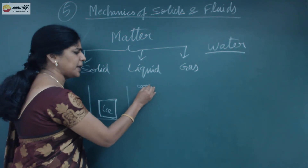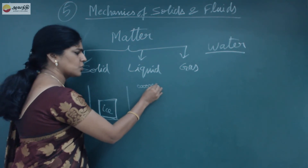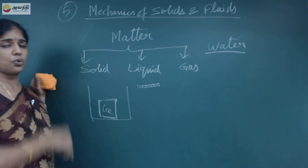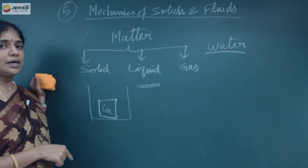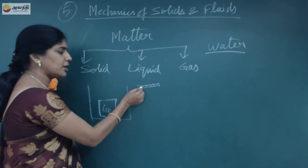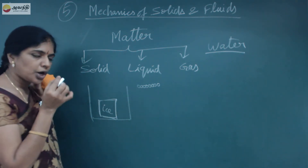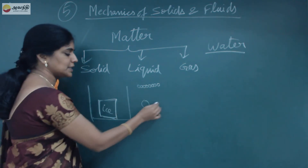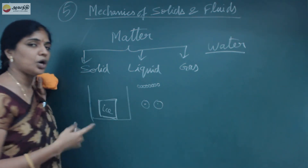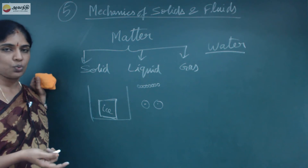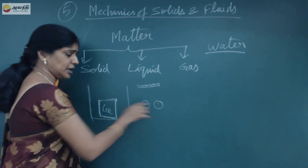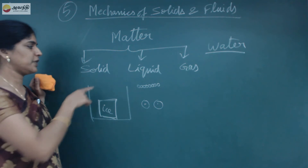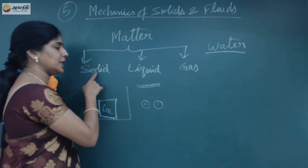In a solid like ice, the atoms and molecules will be very tightly packed — close together. Based on the inter-atomic and inter-molecular distance, we classify matter as solid, liquid, and gas. One atom to another atom has a certain distance — the inter-atomic distance; one molecule to another has the inter-molecular distance.